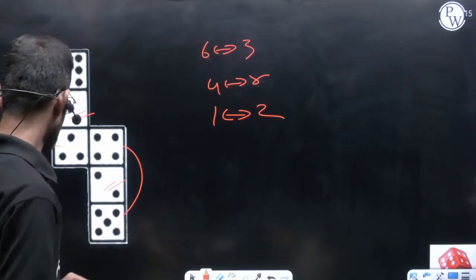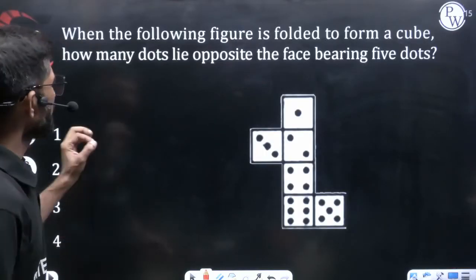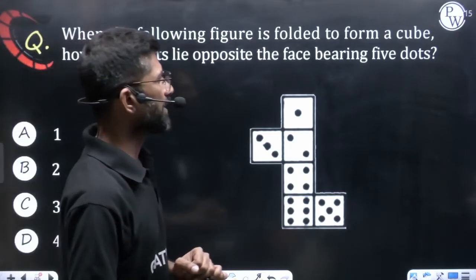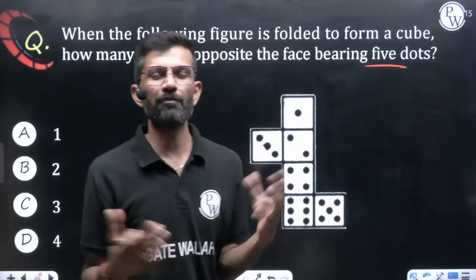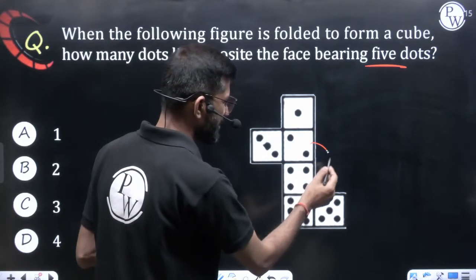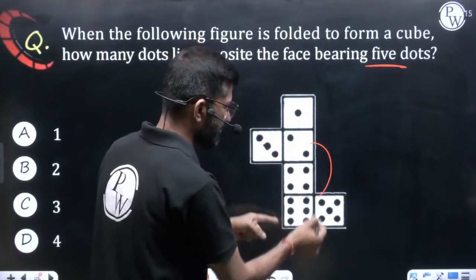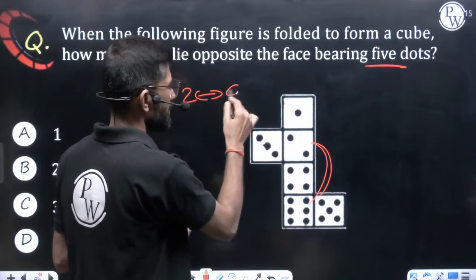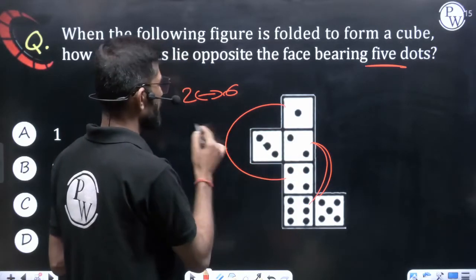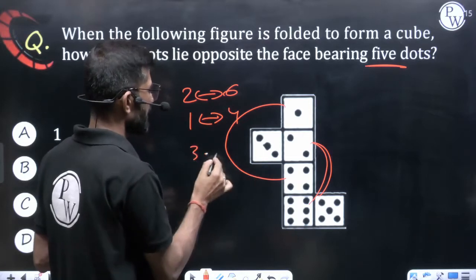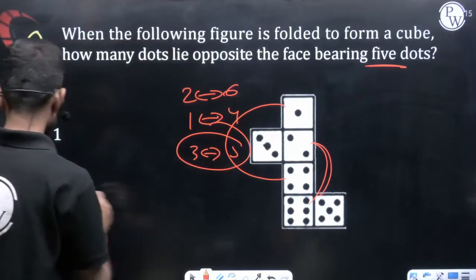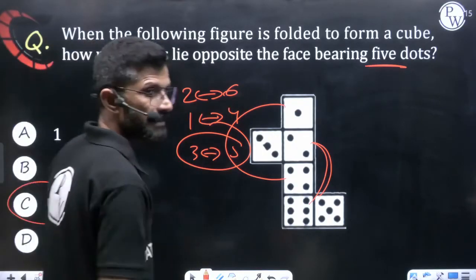Question: When the following figure is folded to form a cube, how many dots lie opposite the face bearing 5 dots? There is a vertical straight line with 2 and 6 — these are opposite. In the same line, 1 and 4 are alternate — these are opposite. Left over is 3 and 5, so 3 and 5 are opposite. They are asking about 5 dots, so 5 opposite is 3. The answer is 3.